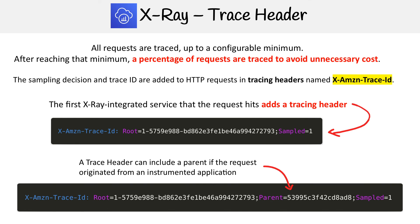You don't really need to remember this for the exam, I'm just showing it to you. Just understand that the trace header determines whether a request will show up in the trace, based on the sample number assigned to it.